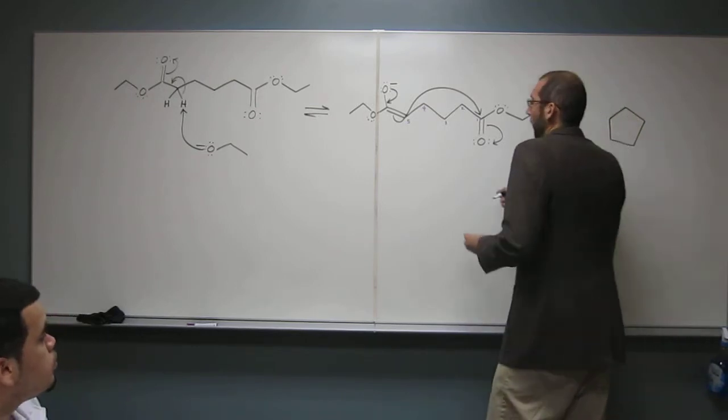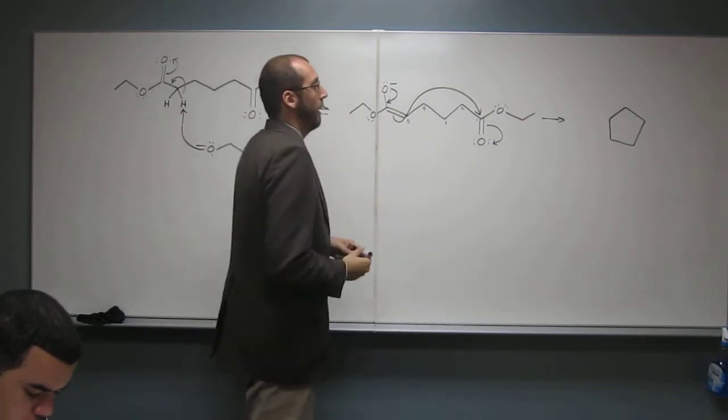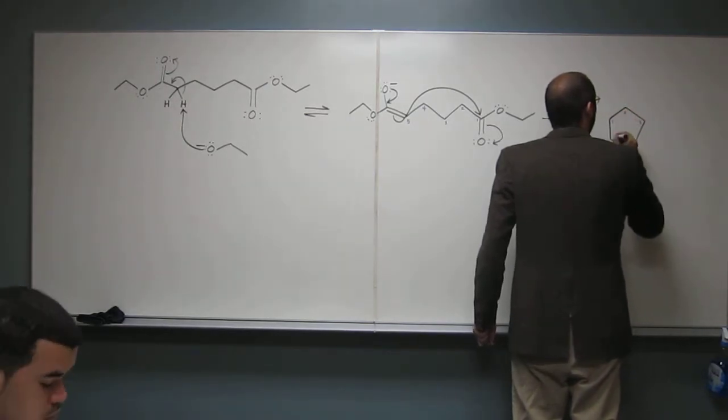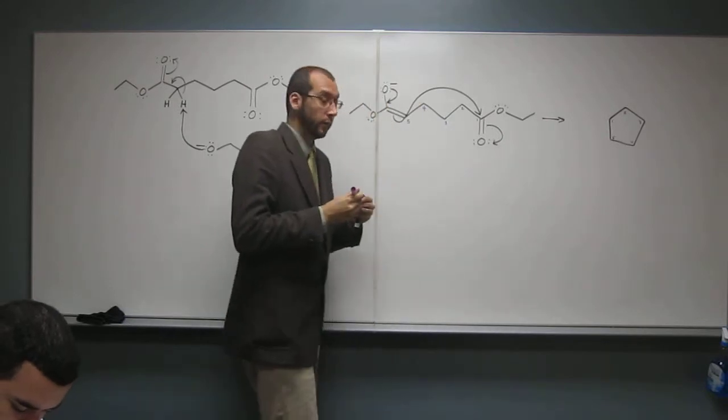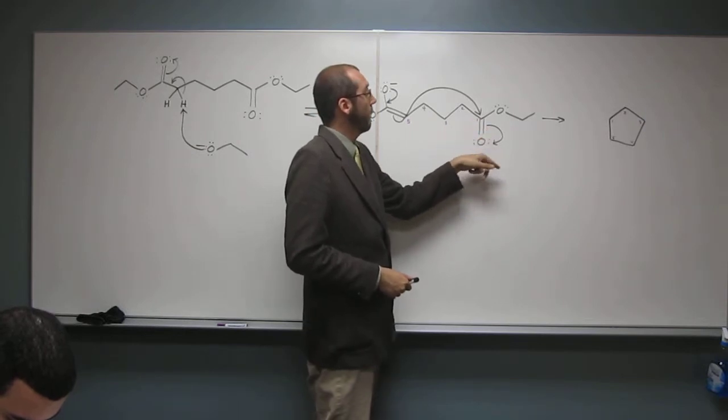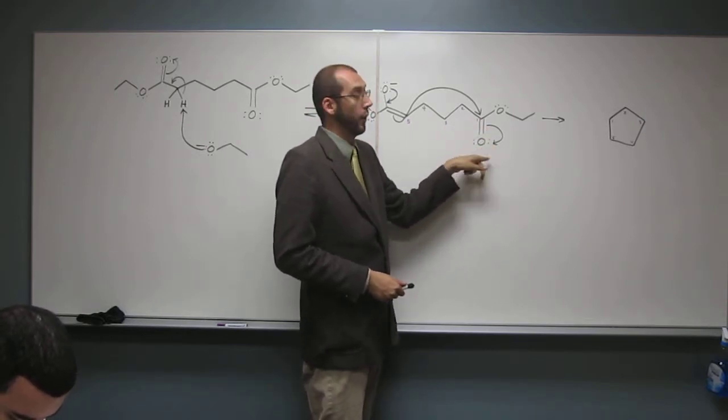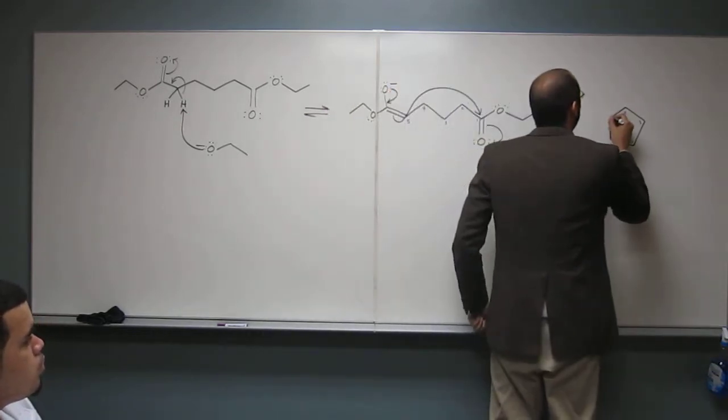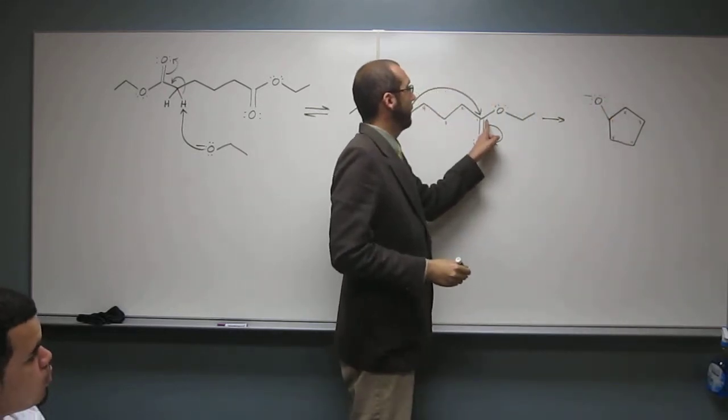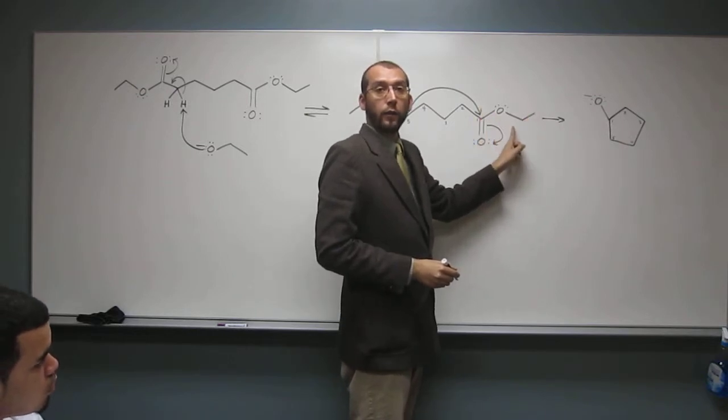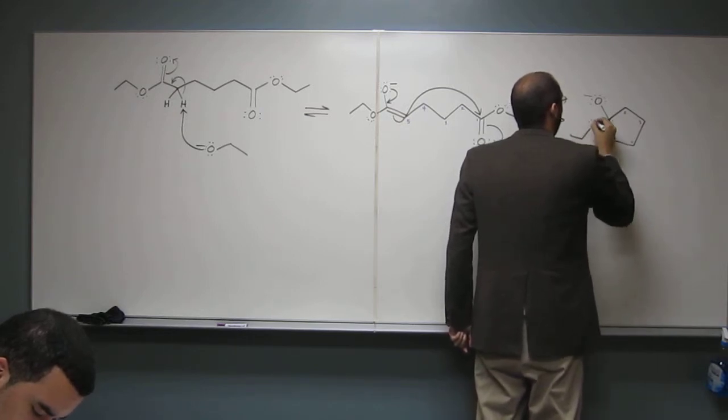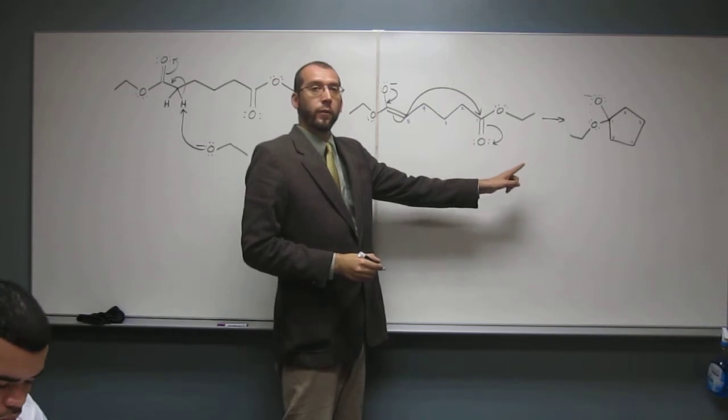And it might be easier for you if you labeled the carbons here, one, two, three, four, five. We can erase them in a second. So, attached to carbon one, you're going to have the O-minus now, because look, the electrons bounced out. Like that. But you also have attached to carbon one, the O-ethyl group, right? So, let's draw that now. Does that make sense, what we've done there? Yes.